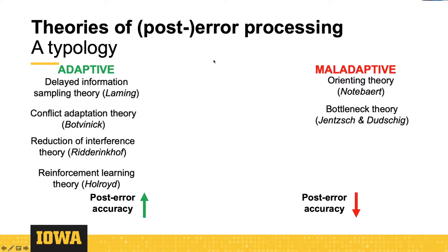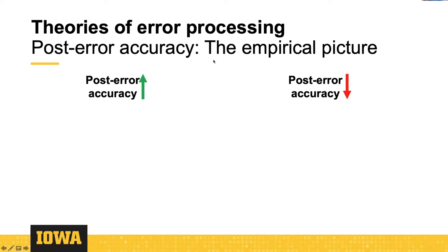So you have your empirical test — run an experiment, see which one's the case, and throw half the theories out. But the problem goes back to the most foundational work on error processing by Laming and by Rabin and Rogers, with Laming finding post-error increases in accuracy and Rabin and Rogers finding post-error decreases — a higher rate of what they call double errors. In subsequent years that empirical picture has not clarified.